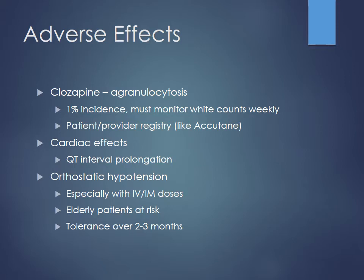If other sources tell you otherwise about QT-prolonging SSRIs, remember citalopram and escitalopram for testing purposes. A patient who overdoses on antipsychotics plus a QT-prolonging SSRI is at risk for torsades de pointes. Always check an EKG. Orthostatic hypotension can also be seen, especially with large bolus IV or IM doses — elderly patients are most at risk, though tolerance does develop over time.